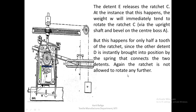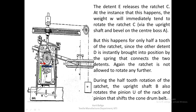The ratchet is only allowed to rotate half a tooth. During this half-tooth rotation, upright shaft B also rotates pinion U, which rotates on the rack, and since the rack is connected with the cone drum belt, it will shift the cone drum belt. This is how the cone drum belt is shifted due to the trigger it gets from the bobbin rail moving upward — that is the first trigger.